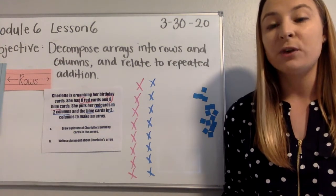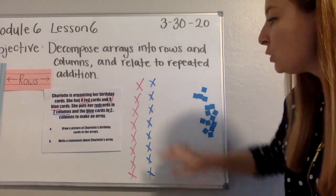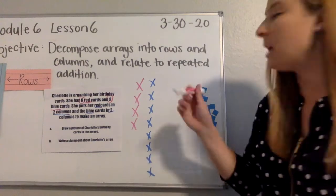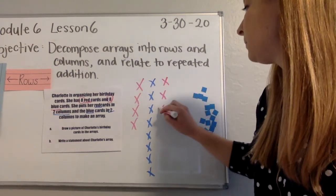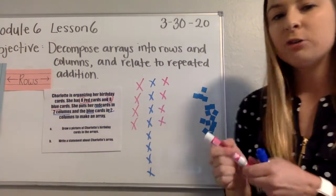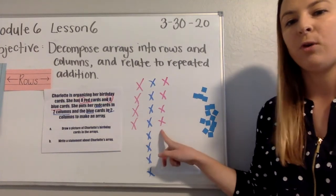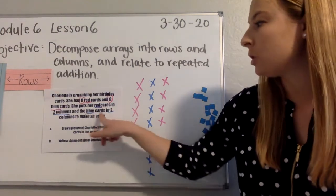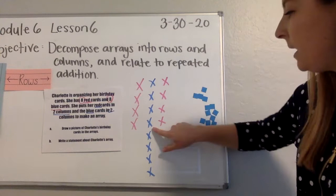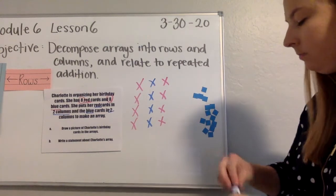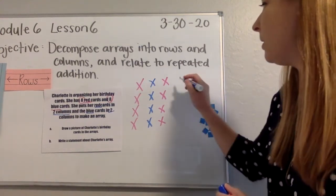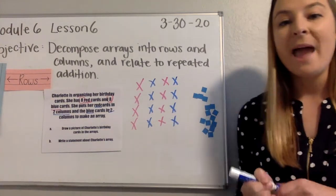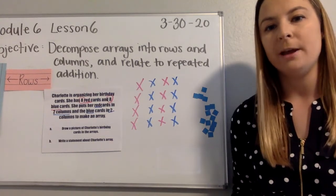I'm using a doubles fact for eight. I know that four plus four makes eight. So I'm going to actually take four of the red cards and I'm going to create a new second column. Now she's got four red cards in a column and four red cards in her second column. Same with the blue cards. I know the blue cards are also in two columns. So I'm going to have to split up four and four with my blue. So I'm going to create a second column of blue cards. Now I have an array to match the word problem for Charlotte and her birthday cards.